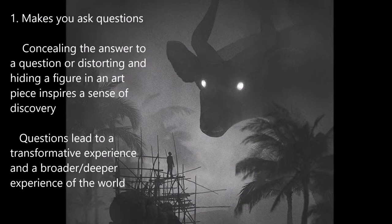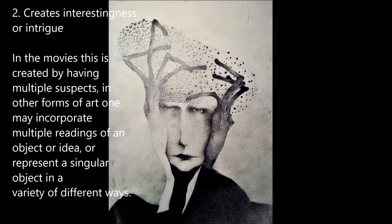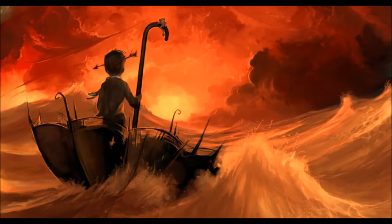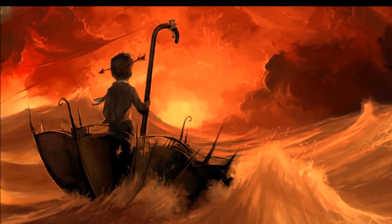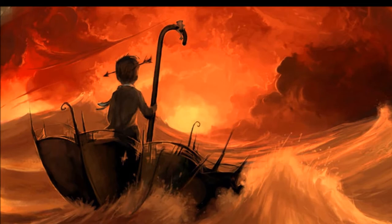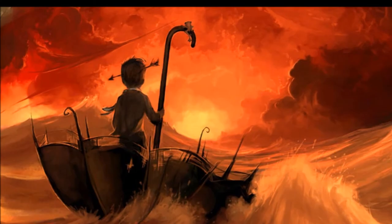And two, creates interestingness or intrigue. In movies this is created by having multiple suspects. In other forms of art one may incorporate multiple readings of an object or an idea, or represent a singular object in a variety of different ways. One may also incorporate multiple emotional tones and sensory experiences, creating an abstractness that needs to be felt. To be really an artistic expression it must transcend depiction if representational and transcend arbitrariness if abstract, presenting itself as self-organized and about something other than representation or mere abstraction. In other words, one must create interestingness in art through some form of tension.